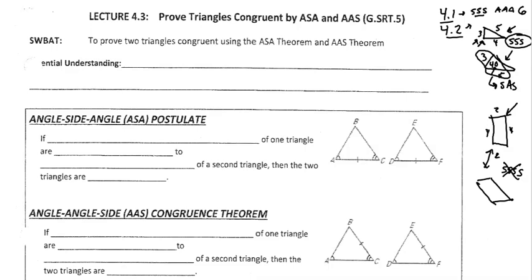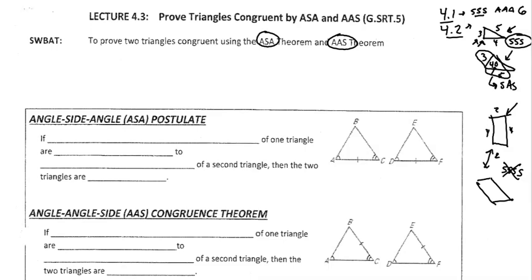The next thing we're going to look at is ASA and AAS. Having an angle, then a side, then an angle — is that enough? And an angle, an angle, and a side? For ASA, I'm saying this side can extend as far as it wants, but this angle has to stay at, let's say, 30 degrees. That side has to be five inches, and this one can be as long as it wants, but this angle has to be 50 degrees. How many options do you have for the other side lengths and angle? You don't have any — this side is locked into place, and so is this side.